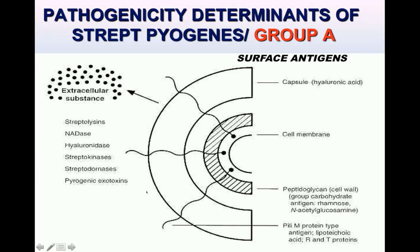Fibers called M proteins protrude from the cell wall and are the most important virulence factors of Group A streptococci. They interfere with ingestion by phagocytes. Antibodies to M proteins provide type-specific immunity. R proteins are believed to be defective forms of M protein, while T antigens make the organism resistant to trypsin or pepsin.